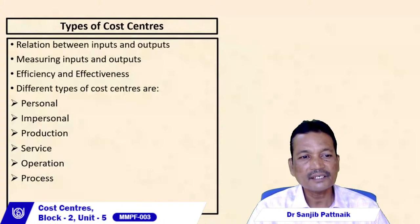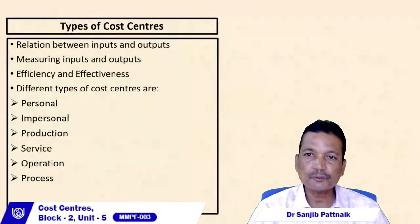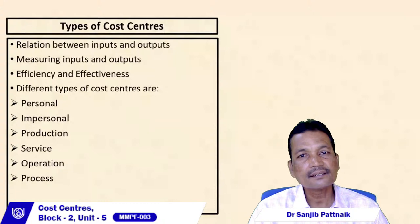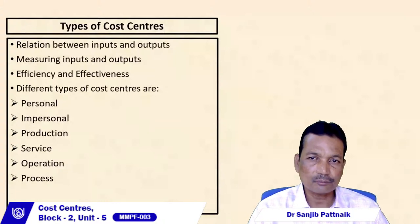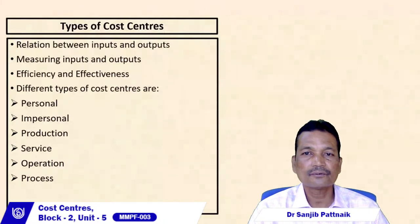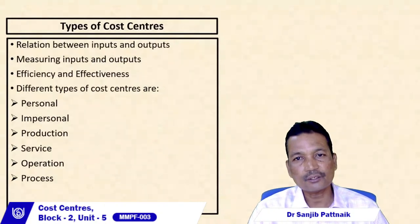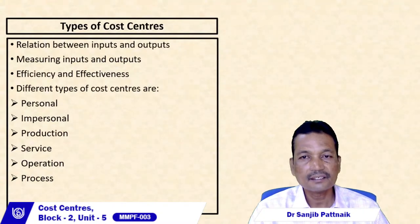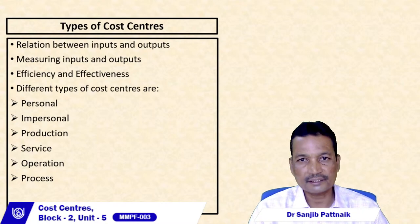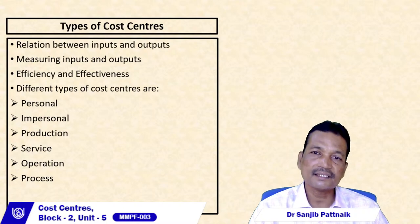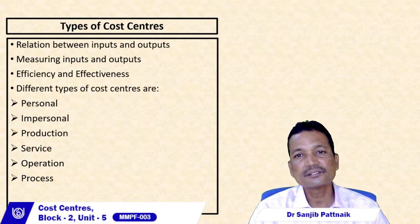Impersonal cost centers are those where a non-living entity, such as a machine, creates costs. While running, the machine consumes utilities and various resources to generate outputs. Examples include the production wing and the tools manufacturing segment.